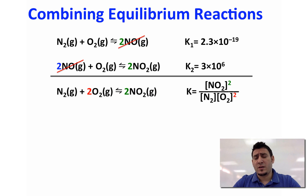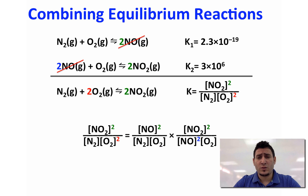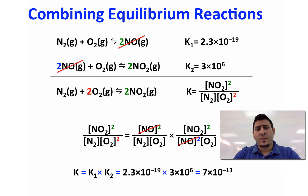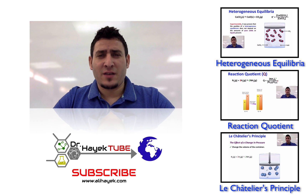The equilibrium constant can be written as concentration of NO₂ to the power 2 divided by concentration of N₂ multiplied by concentration of O₂ squared. Rearranging this expression and including the concentration of NO that was cancelled when we summed the two equations, we can see that K equals K1 times K2. So whenever we sum two or several steps to get the overall reaction, the equilibrium constant for the overall reaction equals the product of the equilibrium constants for the individual steps.